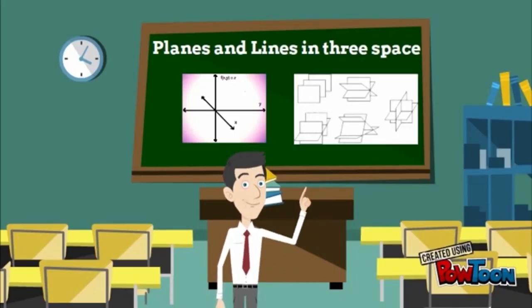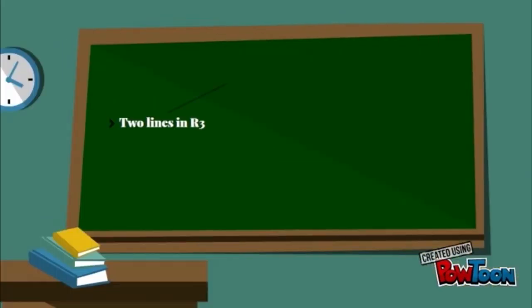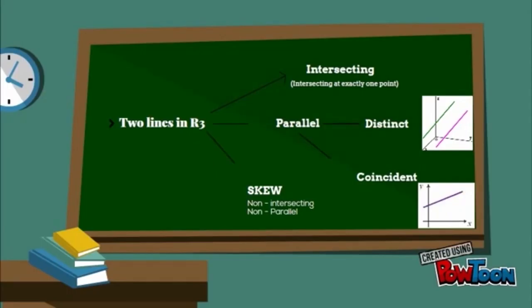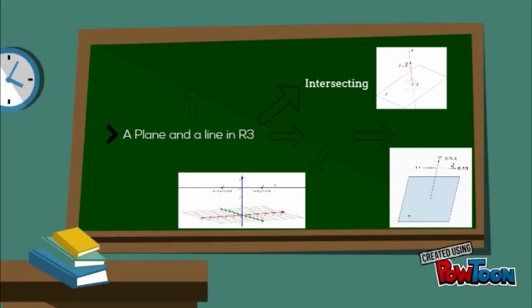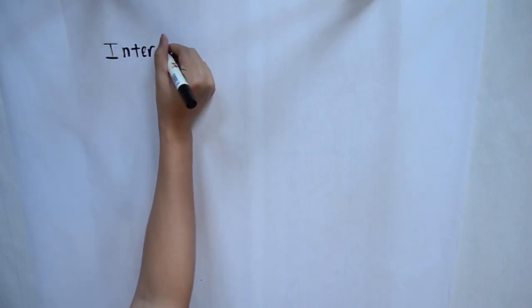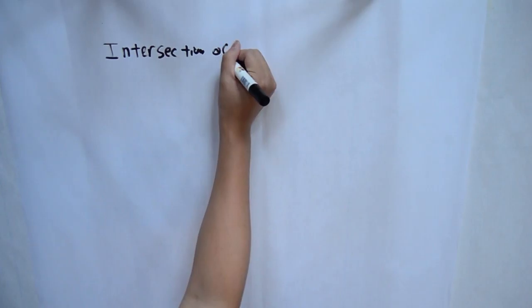Now we cover planes and lines in three-space. Two lines in R3 can be intersecting (meeting at exactly one point), parallel with two types — parallel and distinct or parallel and coincident — or skew, meaning non-intersecting and non-parallel. For planes and lines in R3, the difference between the dimension of the space and the object must be at least two to have skew lines.